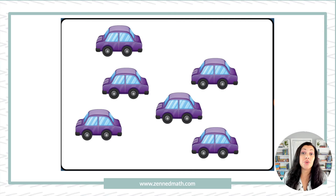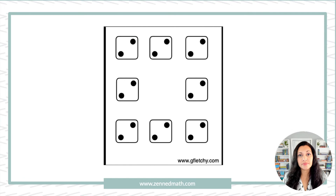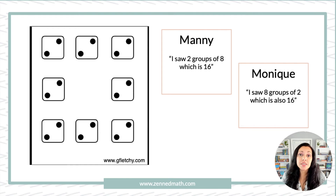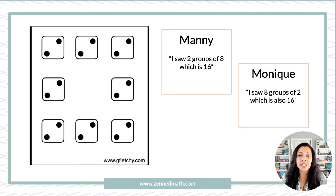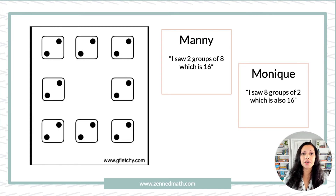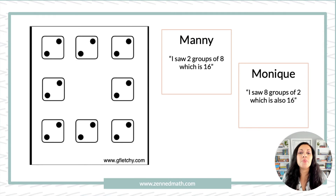Let me show you another way to extend subitizing to upper elementary levels. How many did you see and how did you see them? A very big misconception out there is that subitizing is purely for primary grade levels — incorrect. You can incorporate subitizing with multiplication, as you see here, with fractions, with a ton of stuff. Let's say you put this quick image up. Manny, a third grader, said he saw two groups of eight, which is 16. Monique says she saw eight groups of two, which is 16. Then you can have students discuss: who is correct? Are there two groups of eight or eight groups of two? They both came up with 16 — how can they both be correct if they saw it differently? There's so much conversation that can happen with subitizing at upper elementary grades as well.